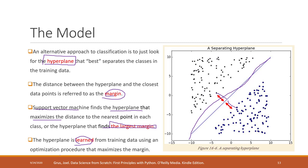We are not going into the details of how to find the best parameters. We just introduced the basic concepts of these models. The most important part is understanding in what scenarios we should use these models. That is SVM for classification.